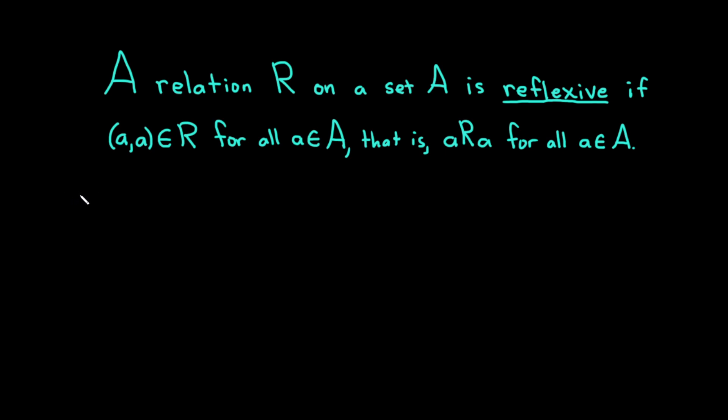Let's do some examples so you can understand this definition a little bit better. So let's start with a simple example here. I'm going to let A be equal to the set containing the numbers 1, 2, and 3.